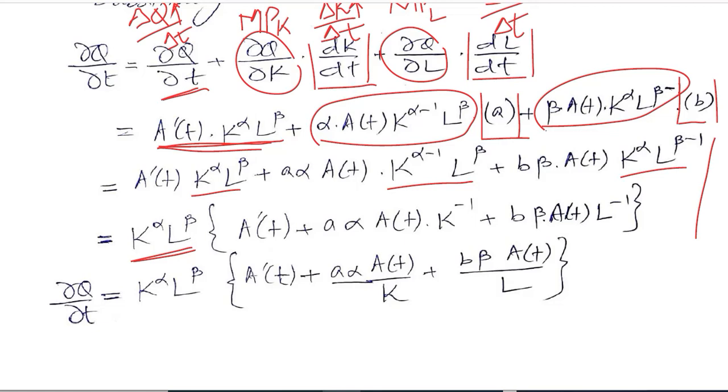So we have taken them as common factors, capital, alpha and labor, beta. The remaining term will be this. The minus 1 power as you can see here. Then minus 1 power of capital is left here. So you can do this simple algebra that you have been doing before.